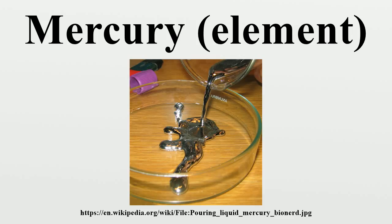Organo-mercury compounds: Organic mercury compounds are historically important, but are of little industrial value in the Western world. Mercury salts are a rare example of simple metal complexes that react directly with aromatic rings. Organo-mercury compounds are always divalent and usually two-coordinate with linear geometry. Unlike organo-cadmium and organo-zinc compounds, organo-mercury compounds do not react with water. They usually have the formula HgR₂, which are often volatile, or HgRX, which are often solids, where R is aryl or alkyl and X is usually halide or acetate. Methyl-mercury, a generic term for compounds with the formula CH₃HgX, is a dangerous family of compounds that are often found in polluted water. They arise by a process known as biomethylation.